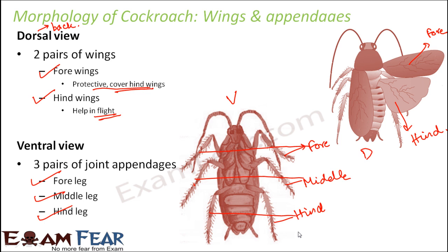Cockroaches can both walk and fly — for walking they need the legs, and for flying they need the wings. The movement of the legs and wings is controlled by muscles. The muscles near the legs control leg movement, while the breast muscles control the movement of the wings. As the breast muscles contract, they cause movement of the wings, and all the legs are controlled by the leg muscles.